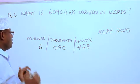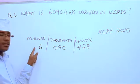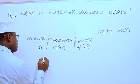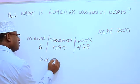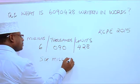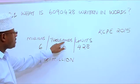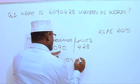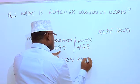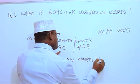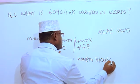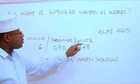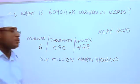We start with the six — we have six million. Then under thousands we have 90, so six million ninety thousand. Under units we have four hundred and twenty-eight, giving us six million ninety thousand four hundred and twenty-eight.